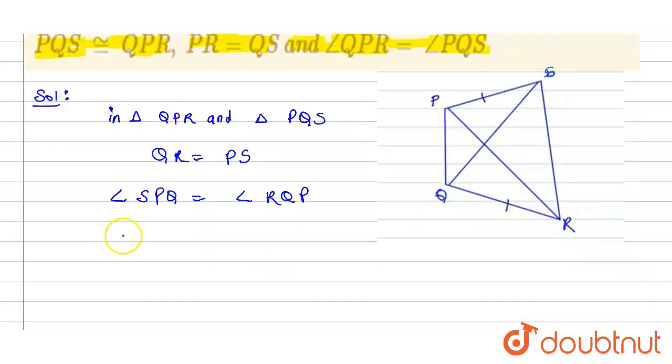Now we have PQ is equals to PQ which is the common side. Now by side angle side property, what we get? We get triangle QPR is congruent to triangle PQS.